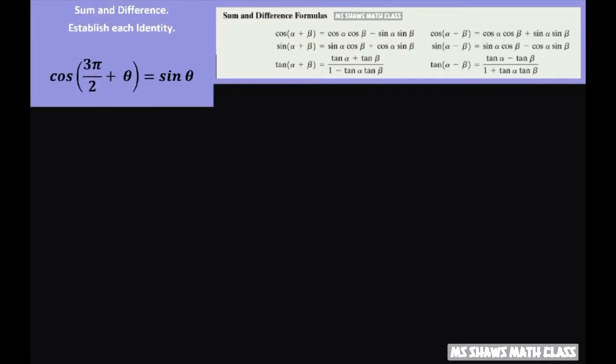So we look for the formula that's going to help us out, and that's cosine of alpha plus beta. We're going to use this right-hand side of the formula and expand to get the identity.